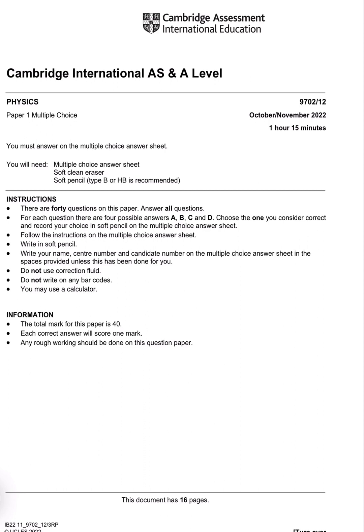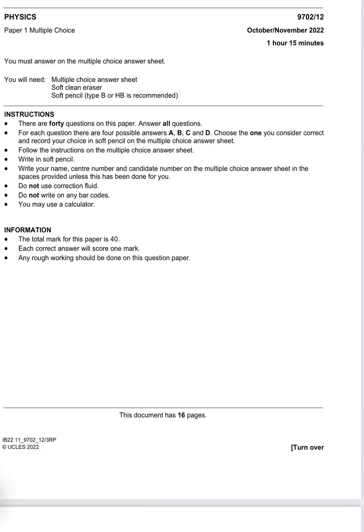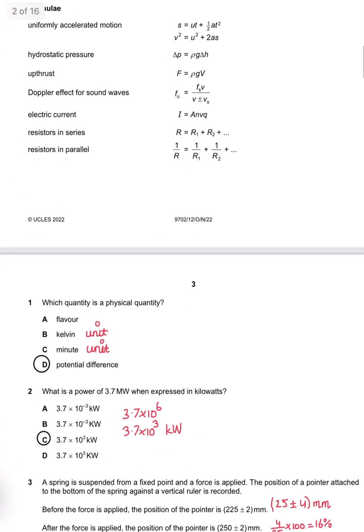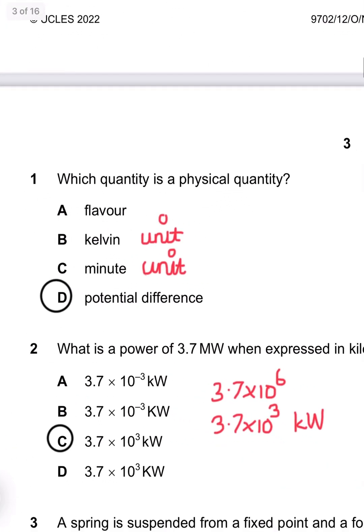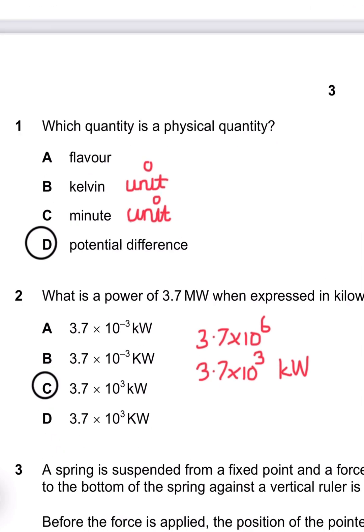Let's start with question number 1. Question 1 says, which quantity is a physical quantity? D is the appropriate answer because it is a physical quantity. The rest are units and types.